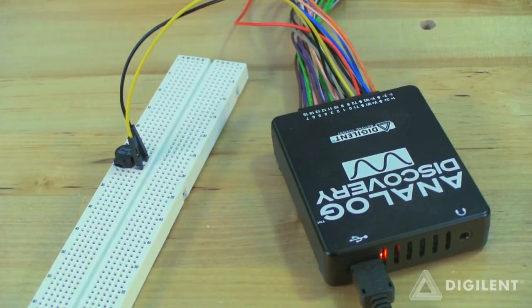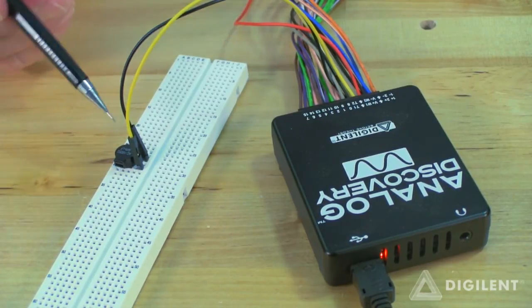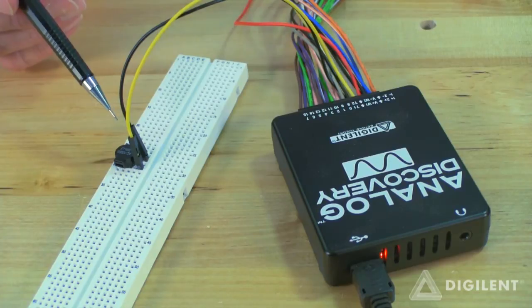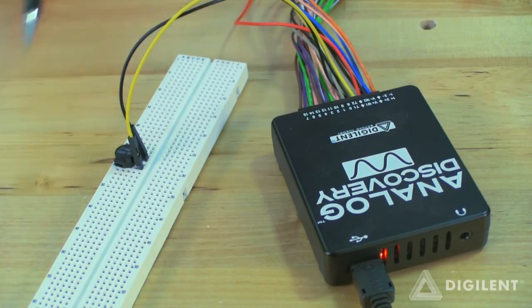Remember that any voltage created by the analog discovery is relative to analog discovery's internal ground, so typically we'll have to connect ground to any circuit we build.